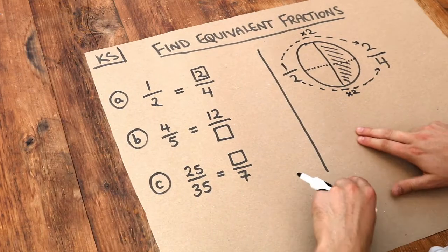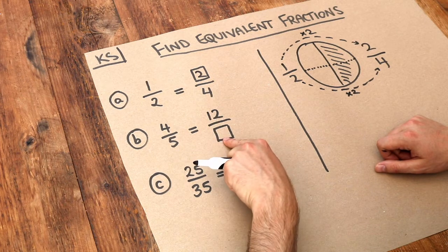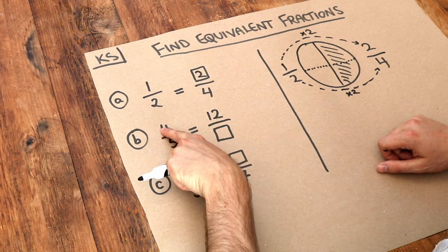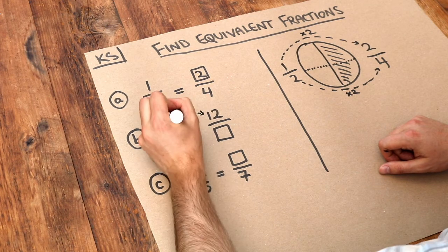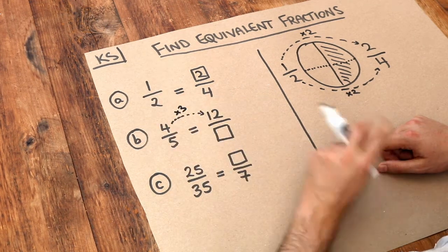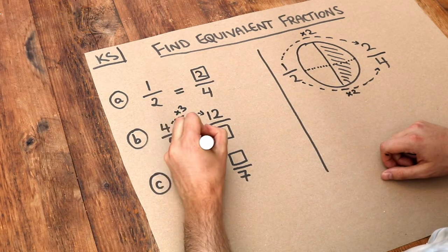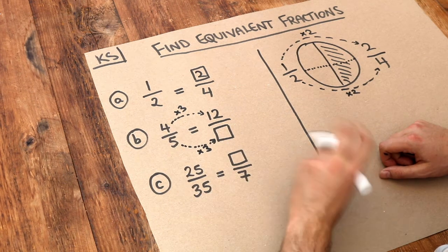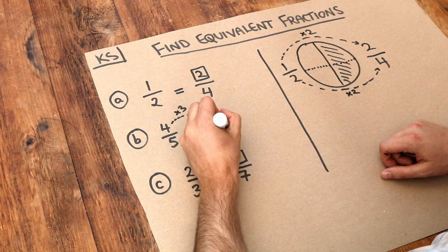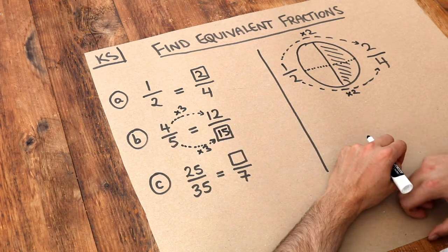Let's look at this next one. Four fifths is the same as twelve over what. Let's see what we did to the four to get to the twelve - it seems that we multiplied that by three. If we multiply the top by three, then we have to do the same to the bottom, the denominator. We have to multiply that by three to keep it the same fraction. Five times three is fifteen, so four fifths is the same as twelve fifteenths.